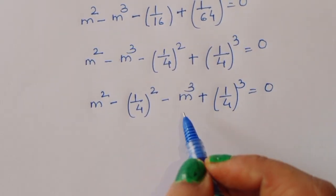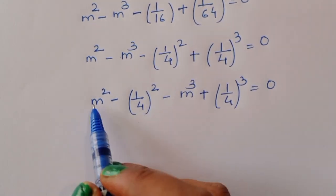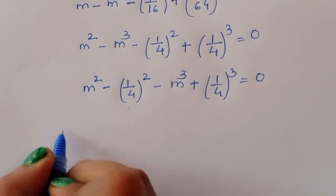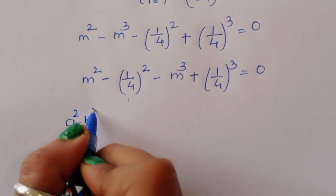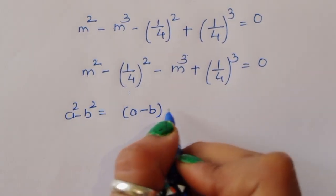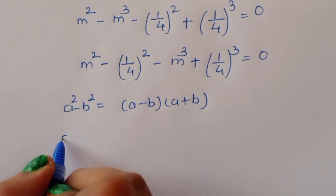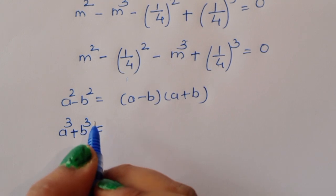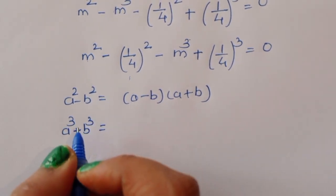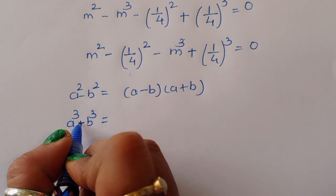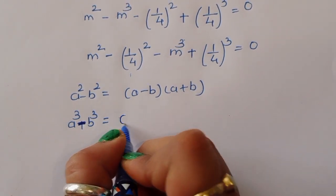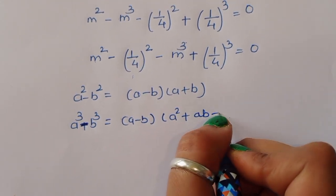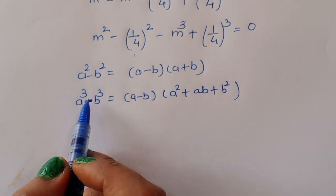Here you can see m squared minus 1 upon 4 squared is of the form a squared minus b squared, and the other part is a cubed minus b cubed. So we use two formulas: first, a squared minus b squared equals (a minus b)(a plus b); and second, a cubed minus b cubed equals (a minus b)(a squared plus ab plus b squared).